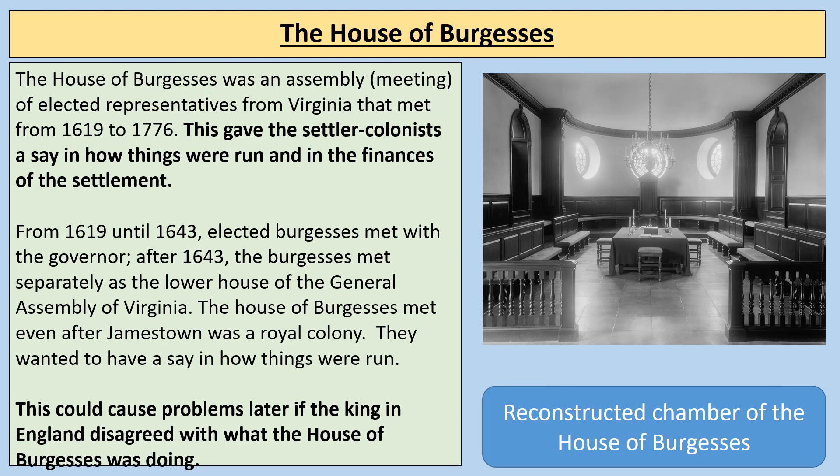The House of Burgesses was an assembly of elected representatives from Virginia. They met from 1619 to 1776, giving settler colonists a say in how things were run and in the finances of the settlement. From 1619 until 1643, elected Burgesses met with the governor; after 1643, they met separately as the lower house of the General Assembly of Virginia. The House of Burgesses met even after Jamestown became a royal colony, and this could cause problems later if the king in England disagreed with what they were doing.